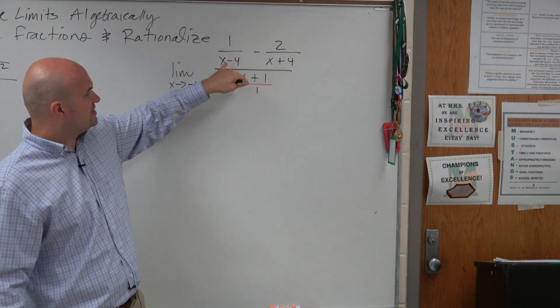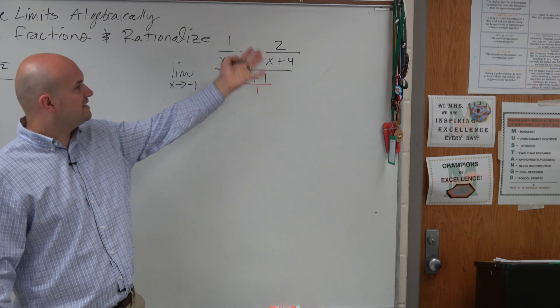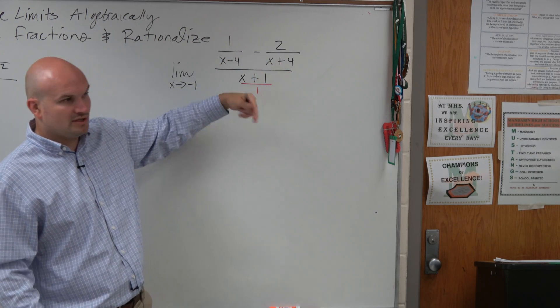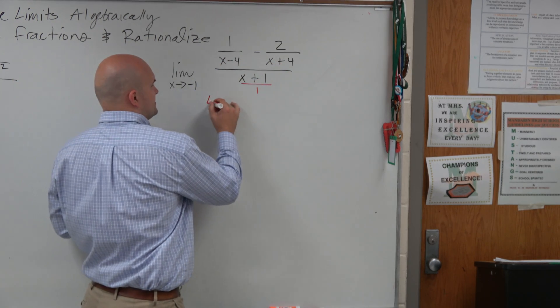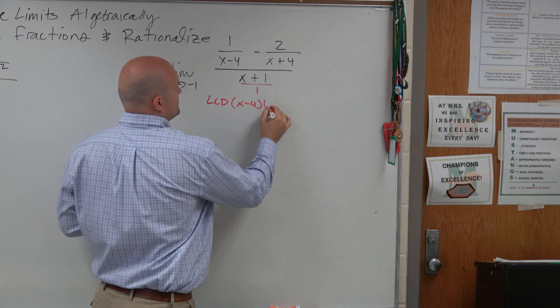These are a little bit harder as far as finding the multiples of x minus 4, right, or the multiples of x plus 4. So the easiest way to find the least common multiple is to just multiply them. So the LCD here is going to be x minus 4 times x plus 4.